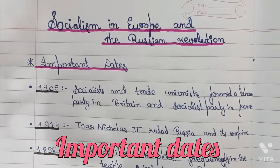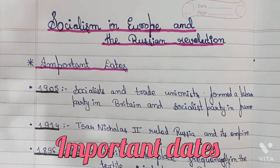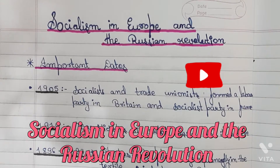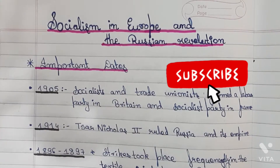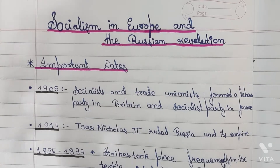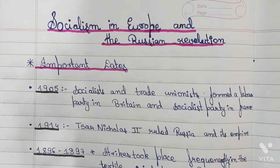Hello everyone and welcome to my YouTube channel. Today we are going to discuss the most important dates from the second chapter of History Class 9th, and the name of the chapter is Socialism in Europe and the Russian Revolution.